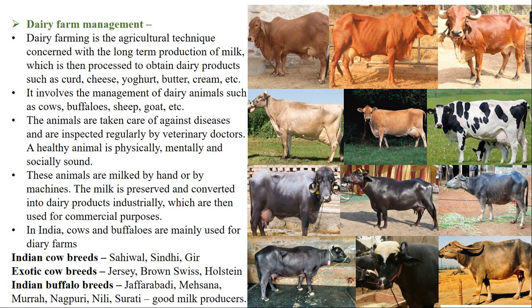These animals are milked in two ways - by hand or by machine. On a smaller scale, the manual process of milking by hand is used, while large-scale dairy farms use machines to milk a large number of animals. Once the milk is obtained, it is preserved and converted into dairy products industrially for commercial purposes.